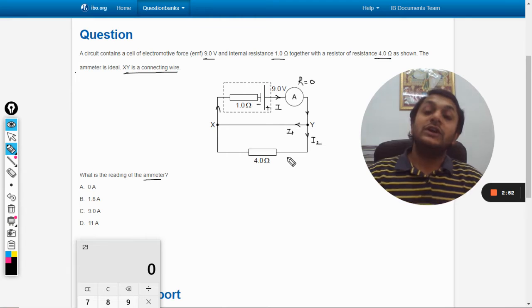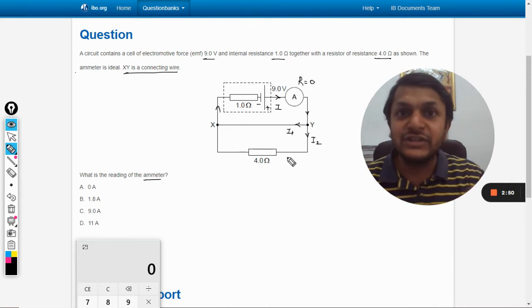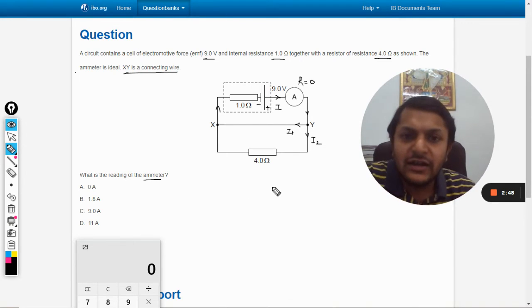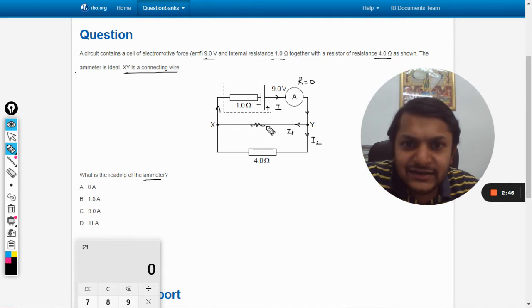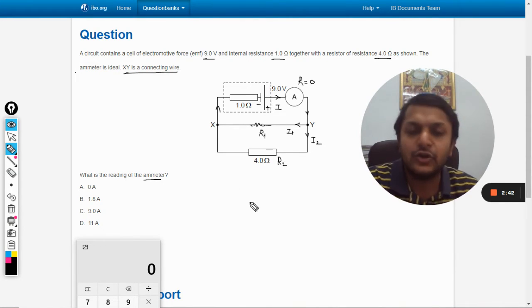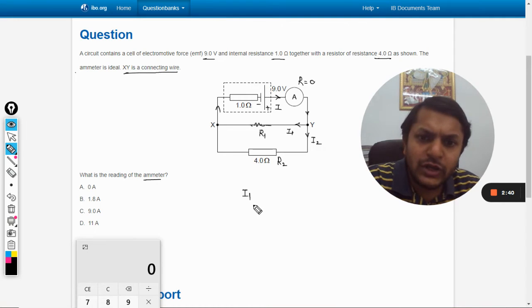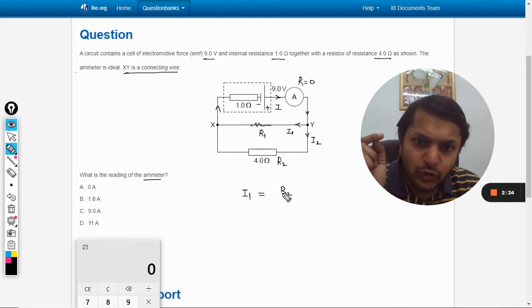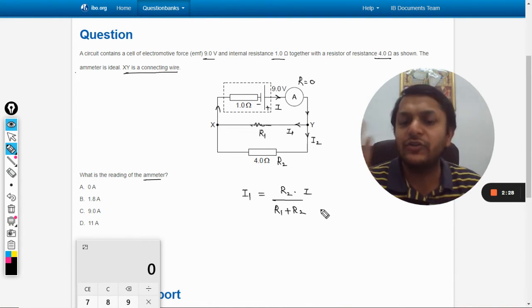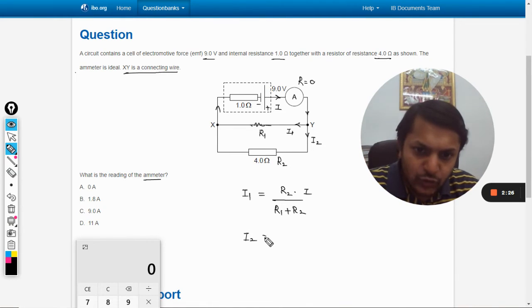Although the same can be learned by using the formula also, I will show you that. Now let us say there is a resistor here, and let we call it r1, and let me call this as r2. So as the formula goes, i1, the current in the first branch, is equal to r2 divided by r1 plus r2 into the total current. And i2 is equal to r1 into i divided by r1 plus r2.